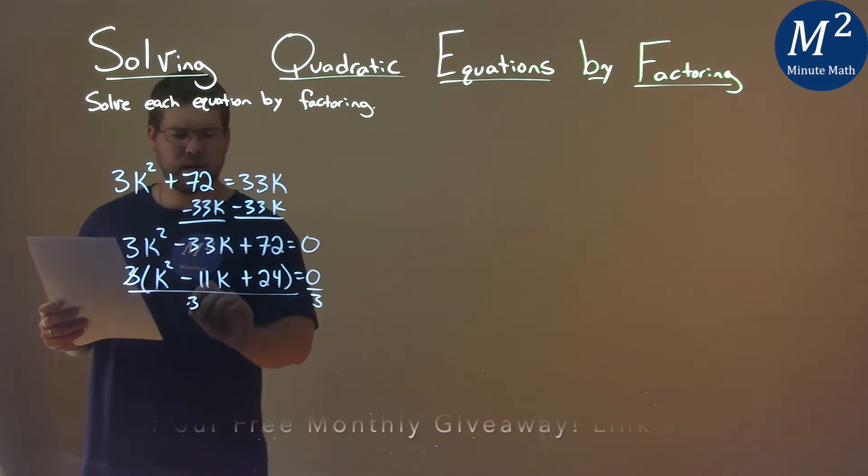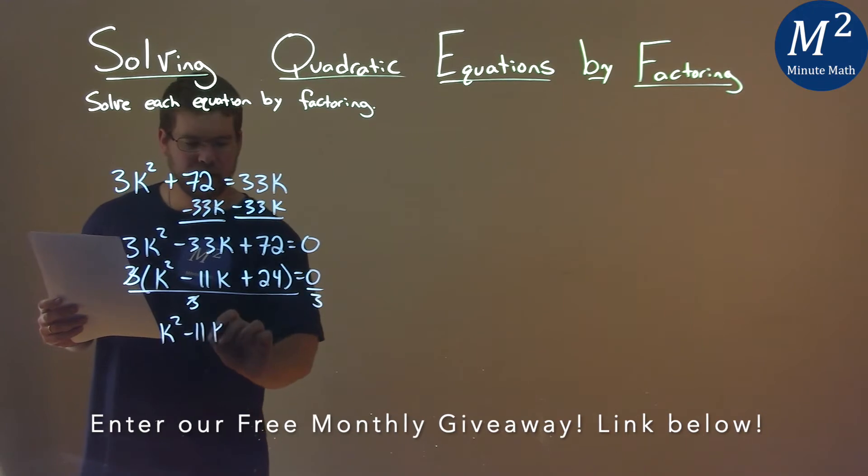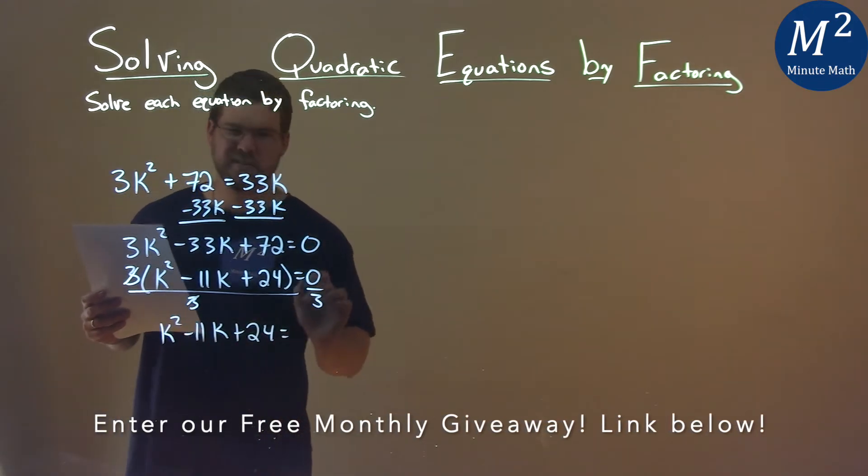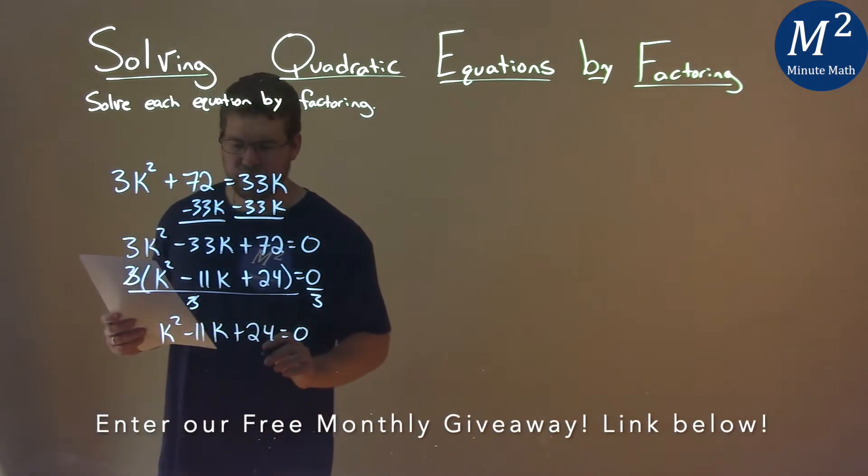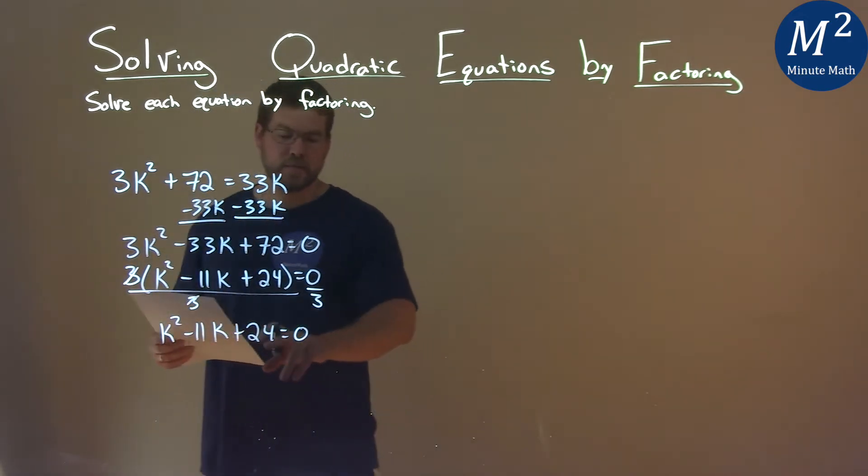If I divide both sides by three, this cancels and we're left with k squared minus 11k plus 24 equals, well, zero divided by three is zero. Now this problem here is a lot easier to deal with, especially when we're factoring.